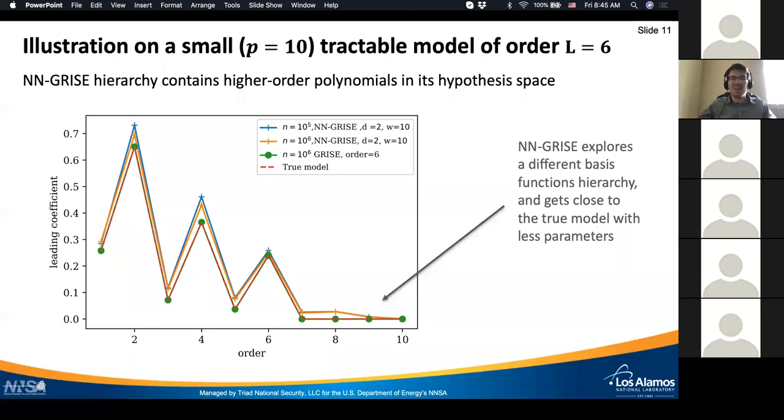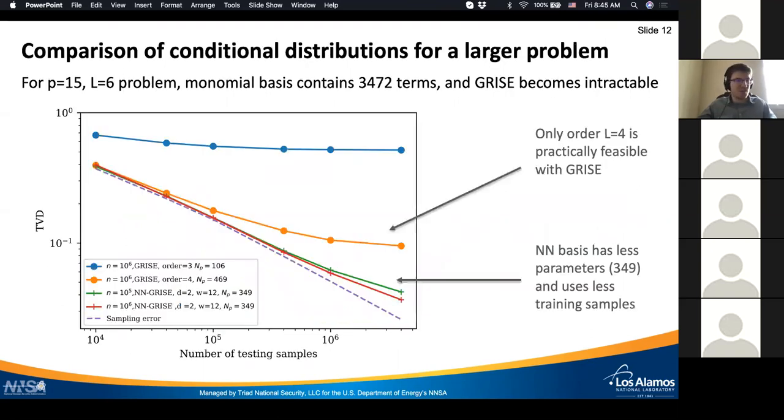As a result, it learns the local energy function pretty accurately using a smaller number of parameters. This advantage of using a different basis function hierarchy is more apparent when we move to slightly larger problems. By simply increasing the previous problem size from 10 to 15, we can quickly realize that the fully general model on binary variables with up to six order interaction in the monomial basis contains around 35,000 terms.